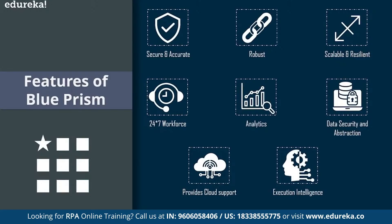With Blue Prism's cloud support, you simply create workers on demand and manage them centrally so your tasks are done. Moving on to the last feature — execution intelligence. The robots connect to systems and react dynamically to the responses in the data on multiple environments. You can have multiple environments with data running across them, and the robots connect to all these systems and react dynamically. So to summarize: Blue Prism is secure and accurate, provides robust features, offers scalability and resilience, a 24x7 workforce, an analytics dashboard, data security and abstraction, cloud support, and execution intelligence.